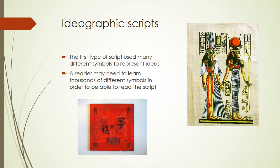First we have the ideographic scripts. The first type of script used many different symbols to represent ideas. In this system, a reader may need to learn thousands of different symbols in order to be able to read the script. Here we can see Egyptian hieroglyphs and a Japanese script.